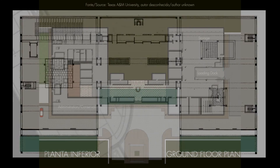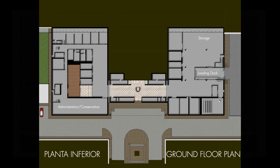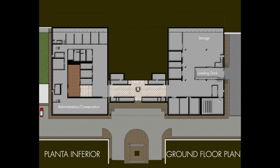In programmatic terms, the museum's ground floor houses a lobby gallery, offices, art conservation laboratory, photographic studio, workshops, warehouses and a loading dock for truck access.